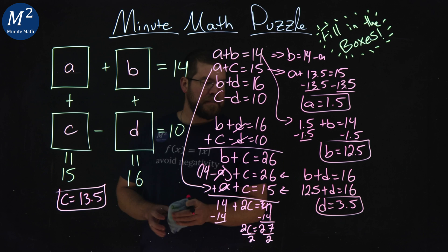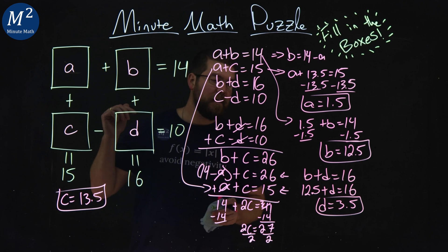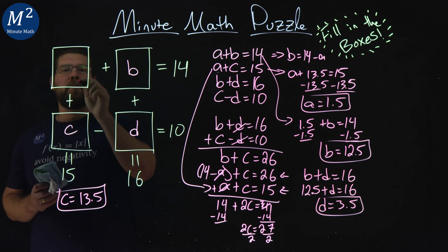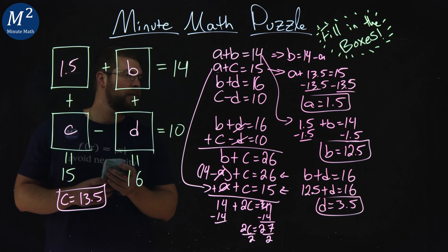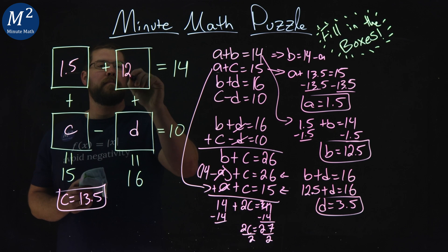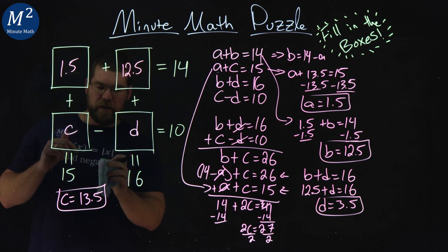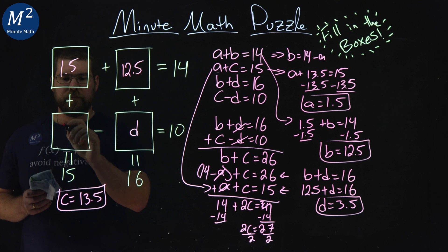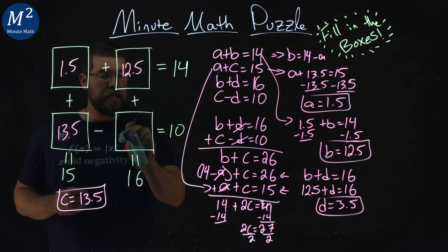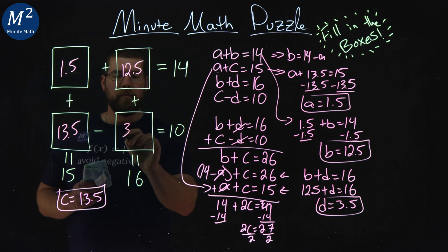So let's go erase our A, B, C, and Ds here and see if it turns out to be true. So A, we said it's 1.5. Let's erase that. We got 1.5 right here. B, we said it was 12.5. C is 13.5. And lastly, the good old D is 3.5.